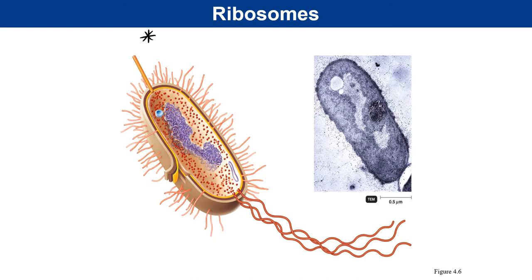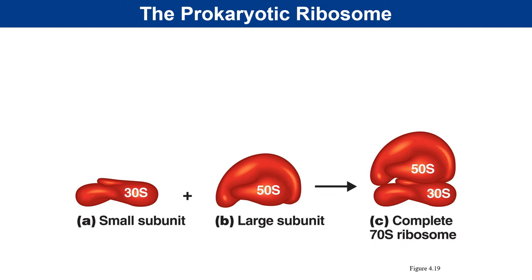Also in the cytoplasm are ribosomes — sites of protein synthesis. All cells must have a way to make proteins, and ribosomes make this possible. Prokaryotic ribosomes are composed of two major molecules: ribosomal RNA and ribosomal proteins. The small subunit is labeled 30S and the large subunit is labeled 50S.